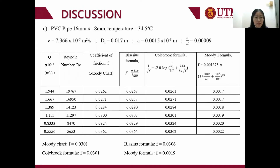For the PVC pipe with dimensions 16 mm × 1.8 mm at temperature 35.25°C, the Moody chart gives 0.0301. The Colebrook formula also gives 0.0301. The Blasius formula gives 0.0306, and the Moody formula gives 0.0019.